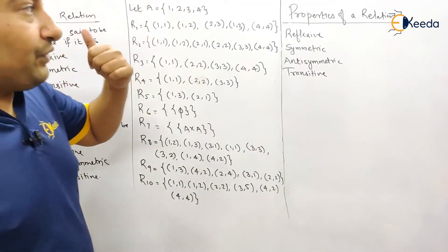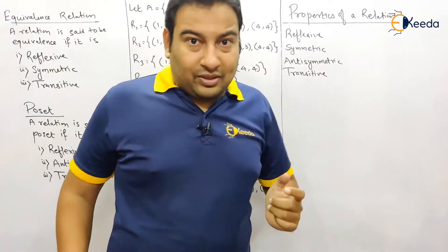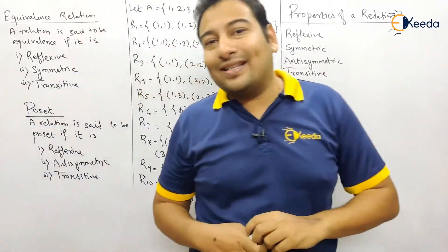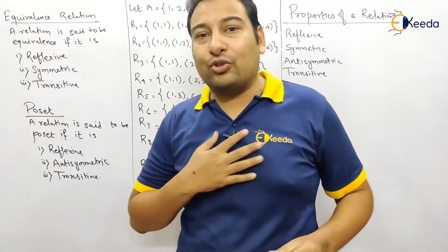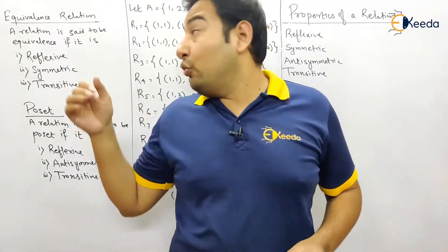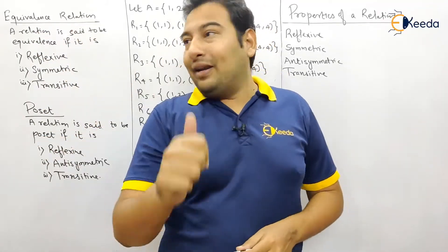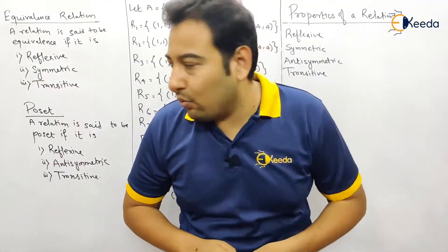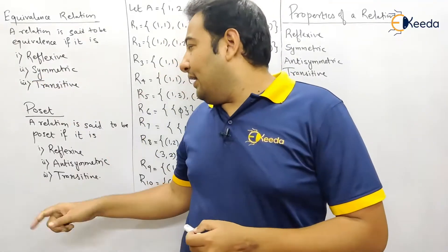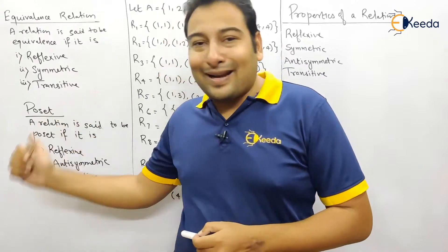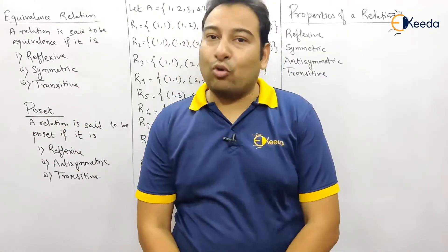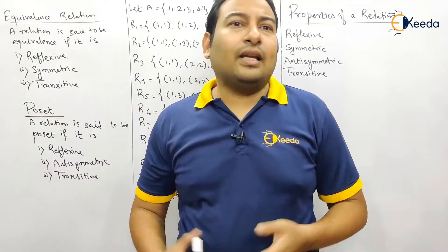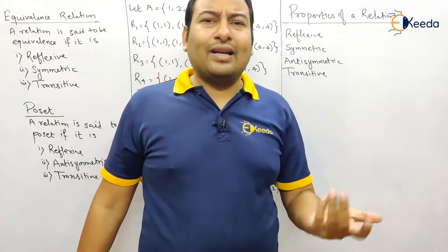We're going to extend the concept by discussing equivalence relations and posets. If a relation is reflexive, symmetric, and transitive, then it is called an equivalence relation. If a relation is reflexive, anti-symmetric, and transitive, then it is called a poset.